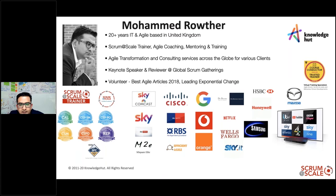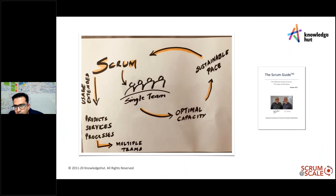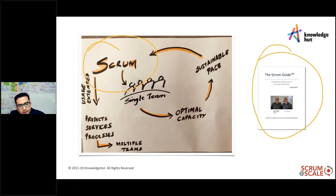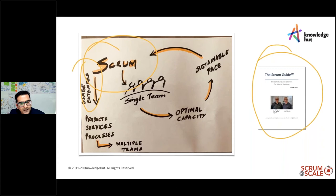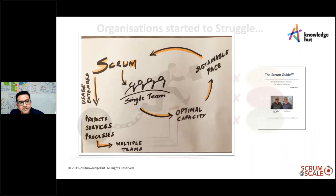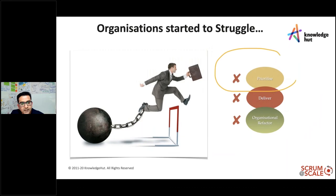Scrum was designed for a single team. It originally started with the Scrum Guide — designed for a single team to deliver and maintain a sustainable pace using their optimal capacity. As companies started using more products, they started forming multiple Scrum teams. But problems came with this — organizations started to struggle with prioritizing, delivering, and organizational refactoring.